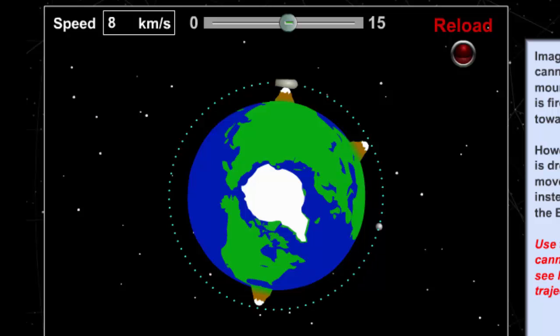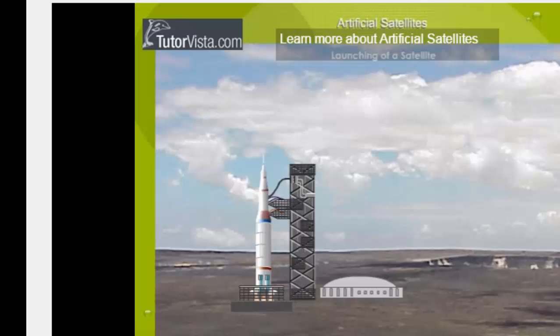In the case of this cannonball, assuming it's at a height of around 300 kilometers above the Earth, it will take it around 85 minutes to orbit the Earth at this speed of 8 kilometers per second. In the case of launching a real satellite, this does not happen through a cannon like in the previous demonstration. This happens through a rocket.